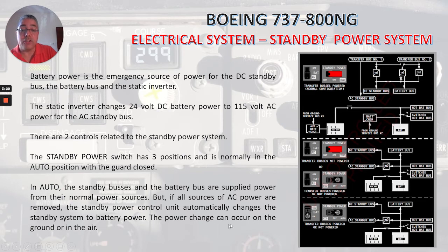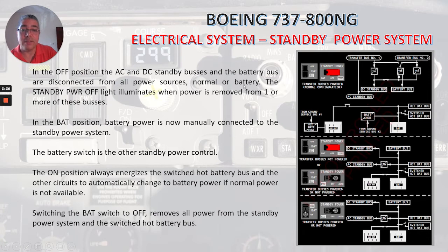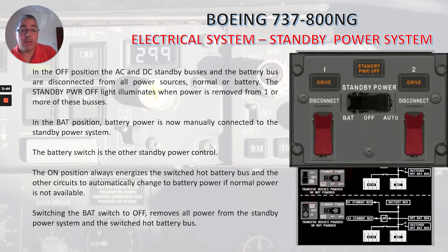The power change can occur on the ground or in the air. In the off position, the AC and DC standby buses and the battery bus are disconnected from all power sources, normal or battery. The standby power off light illuminates when power is removed from one or more of these buses, and here you have the standby power off light on the panel.